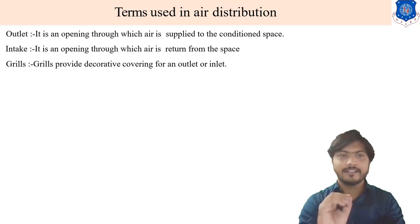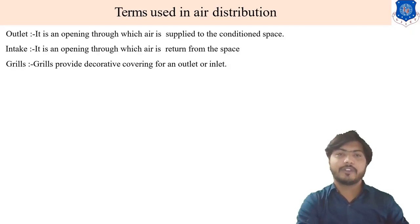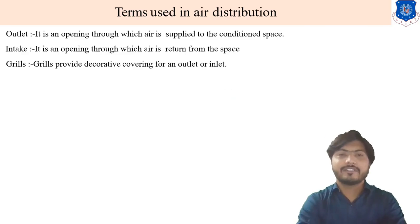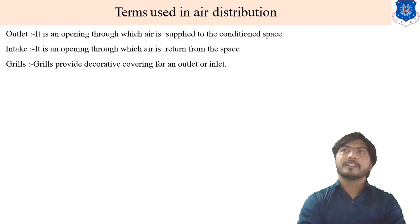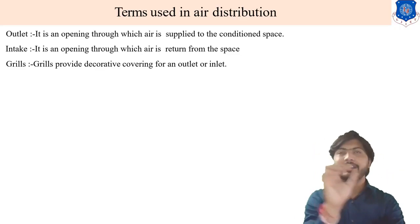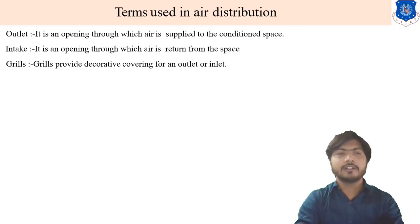Next is grill. What is the meaning of grill? Grills provide decorative covering for the outlet or inlet. You can see the portion that is a grill on an air conditioning system — it attaches to the outlet or inlet.